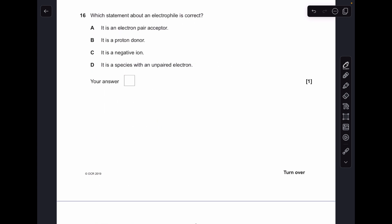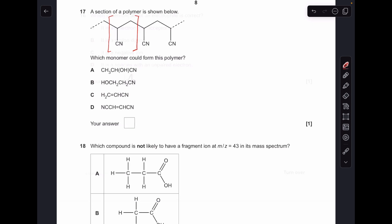Number 16, you know your definition, you'll get this in a fraction of a second. Electrophiles are electron pair acceptors, so it's A. Number 17, so I've just drawn the brackets around the repeat unit, so we'll draw that monomer up now and see which one it is. So there's the monomer, so it's option C.